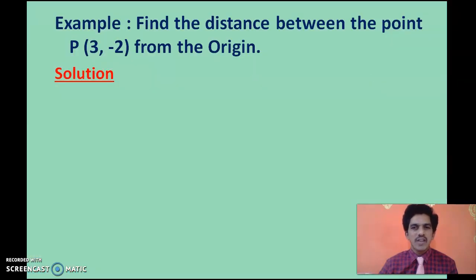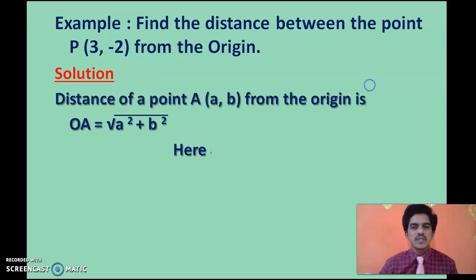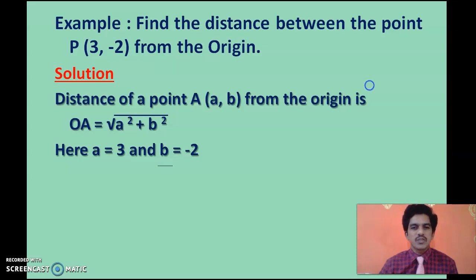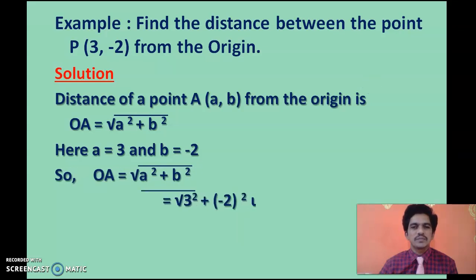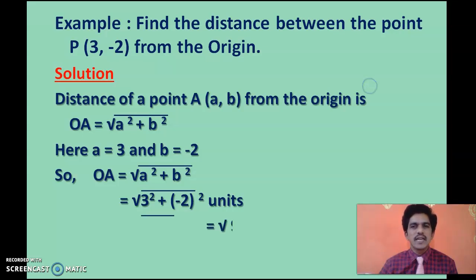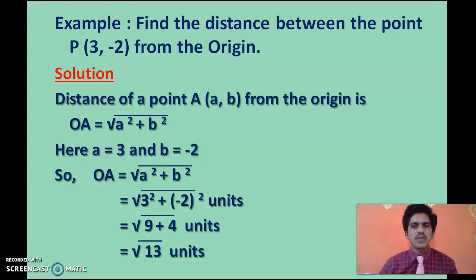Now we will use some numerical values. Find the distance of the point P(3, −2) from the origin. Using the formula √(a² + b²), where a = 3 and b = −2, we get √(3² + (−2)²) = √(9 + 4) = √13 units. So it is very simple to calculate the distance of a point from the origin — just square the coordinates, add them, and take the square root. This is the first special case of the distance formula.